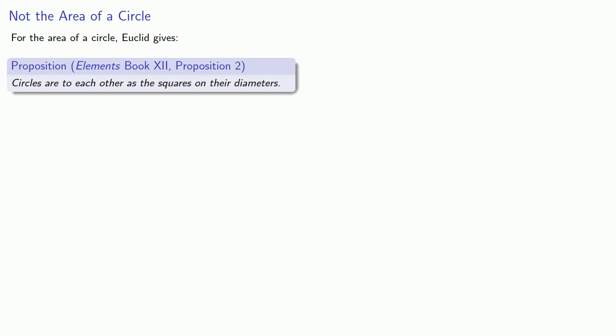Now because this is a statement about a proportionality, we can read this as the area of a circle is some constant of proportionality times the square on the diameter. And here's the important thing. Euclid never gave the value of this constant of proportionality. So what is that constant of proportionality? We'll take a look at that later.